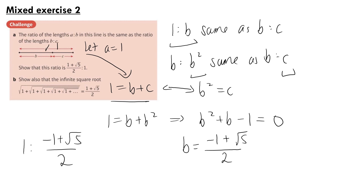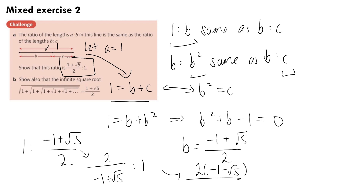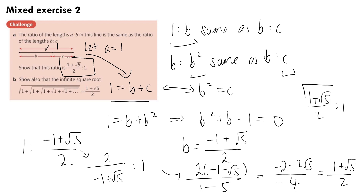To express this in the required form (1+√5)/2 to 1, we divide both sides by (-1+√5)/2 to get 2/(-1+√5) to 1. Rationalising the denominator by multiplying top and bottom by (-1 - √5) gives 2(-1-√5) over [(-1+√5)(-1-√5)] = 2(-1-√5) over (1-5) = 2(-1-√5) over (-4), which simplifies to (1+√5)/2. So our ratio is (1+√5)/2 to 1, as required.